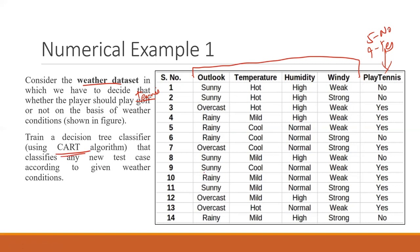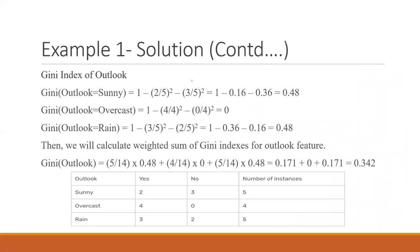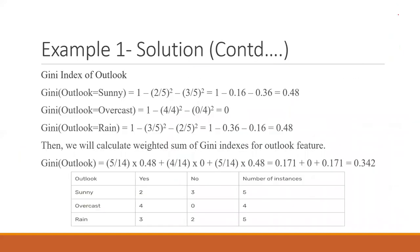We want to train our model and build the tree using the CART algorithm. First, calculate the Gini index: Gini = 1 − Σ(pi²), which is the sum of squared probabilities of each class. The 'Yes' class has probability 9/14 and the 'No' class has probability 5/14.